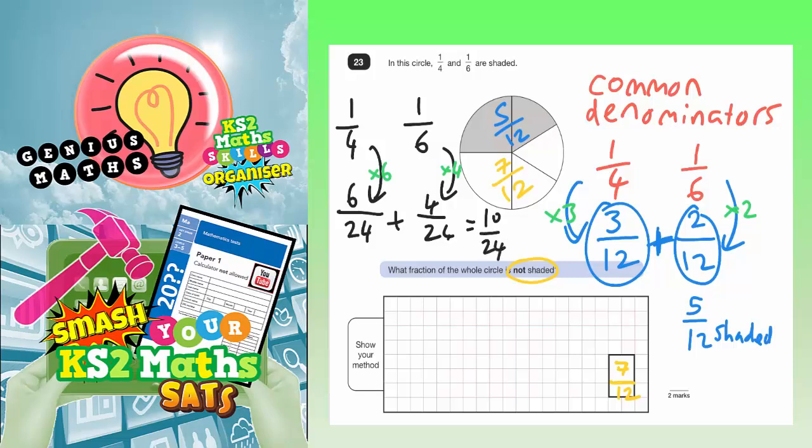So we could say that this shaded bit is ten twenty-fourths. But if ten twenty-fourths is shaded, then to get up to 24, that would be fourteen twenty-fourths not shaded.